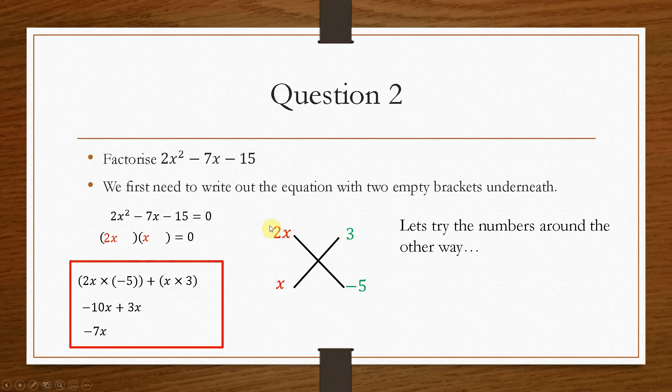So that means this is in the correct order. It means that the first bracket is 2x plus 3, and your second bracket is x minus 5. And that's how you would go about solving the more difficult trinomials using the cross method.